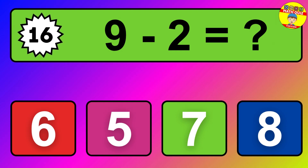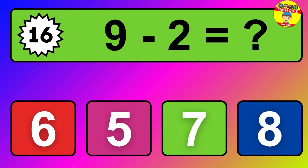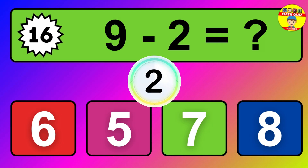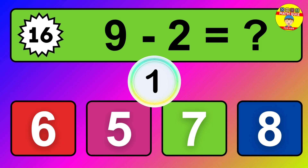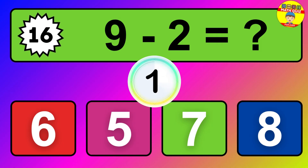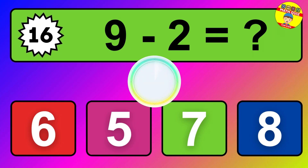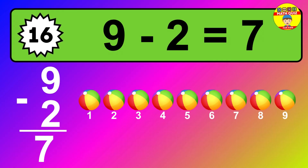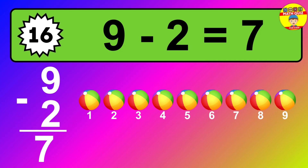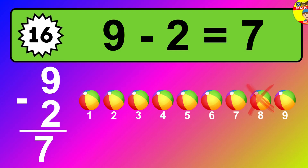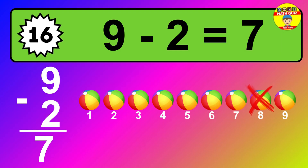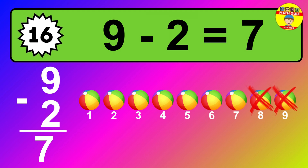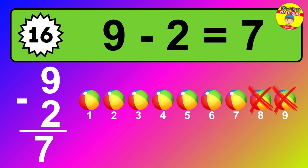Question sixteen: nine minus two equals what? So the answer is nine minus two is seven. Let's count it: one, two, three, four, five, six, seven.